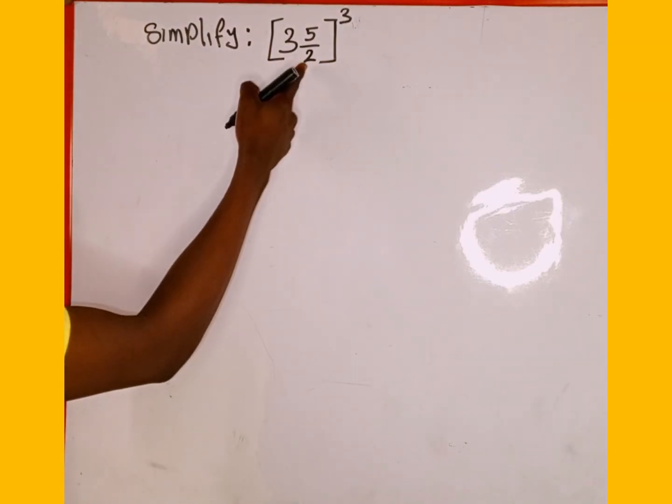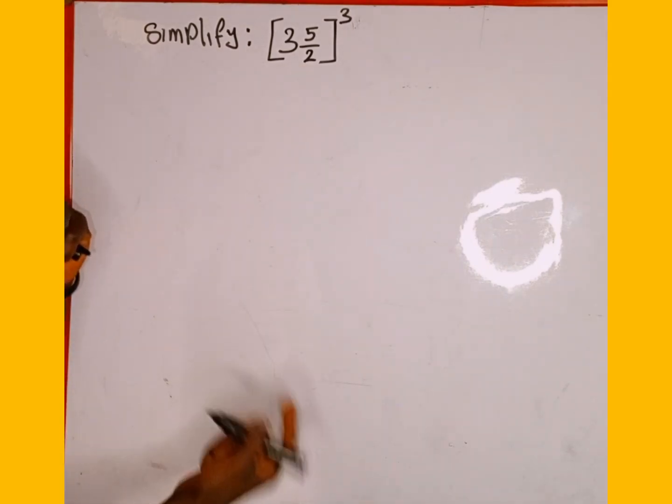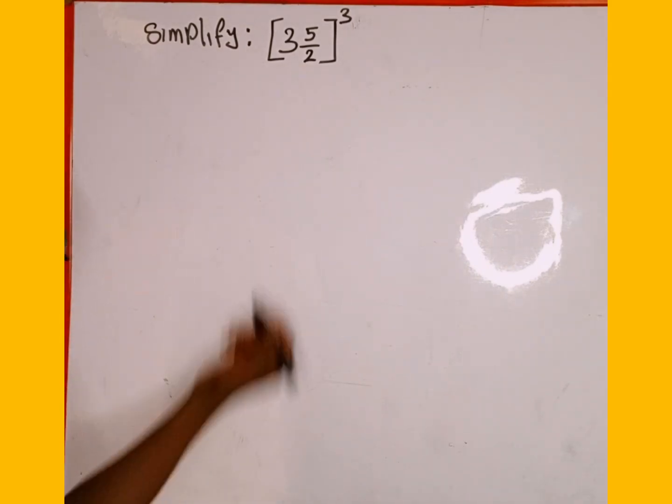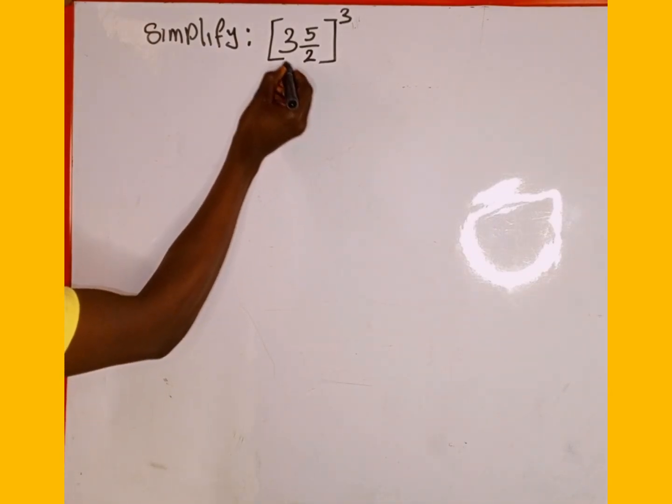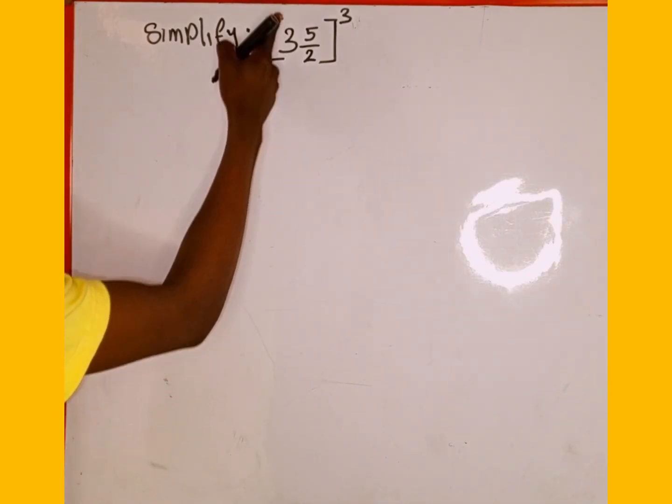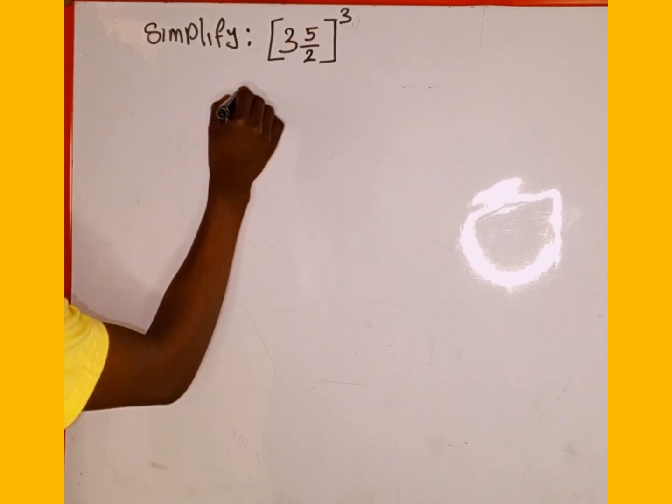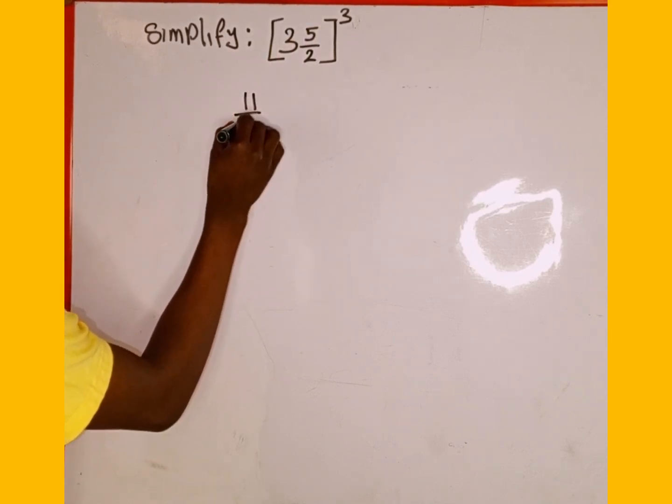So the first thing you are going to do, you know this is a mixed fraction, we are going to convert this mixed fraction to improper fraction before we continue. So how are we going to do that is by using this 2 to multiply 3, which is going to give us 6. Then add 6 to 5 is going to give us 11, then divided by 2.